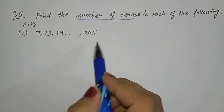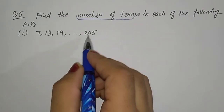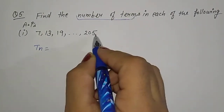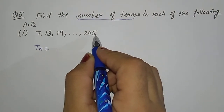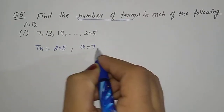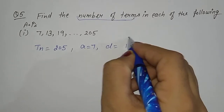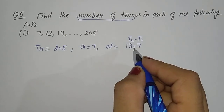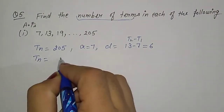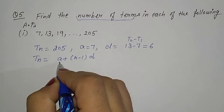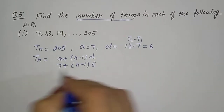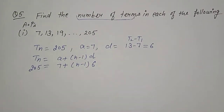We need to find the nth term. We let TN be the last value, because when TN is the last term, that gives the total number of terms. So TN = 205, A = 7, and D = T2 minus T1 = 13 minus 7 = 6. Using TN = A + (N minus 1) into D: 205 = 7 + (N minus 1) into 6.